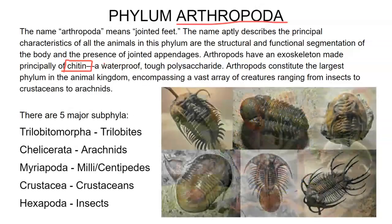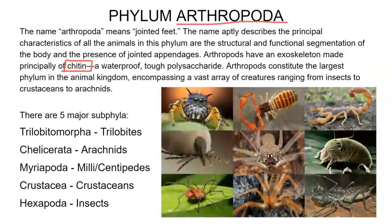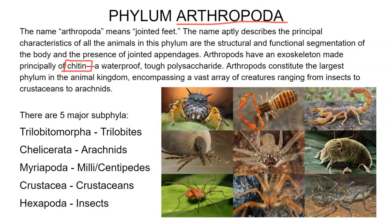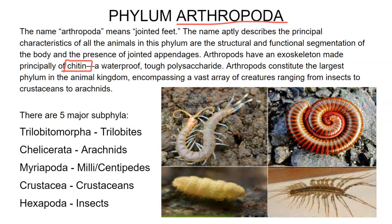We also have arachnids, which include scorpions, ticks, spiders, whip scorpions, and tarantulas. We also have millipedes and centipedes in the class Myriapoda. They have many, many legs — that's the characteristic of myriapoda. Some of them can be quite venomous, like certain millipedes — don't play with those. Then we have crustaceans, which are very incredibly diverse: lobsters, shrimp, mantis shrimp, crabs, barnacles, copepods, and brine shrimp, which are very important for the ocean ecosystem.